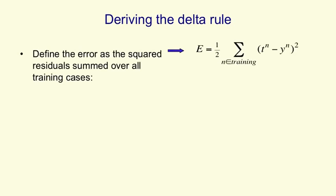So now we're going to derive the delta rule. We start by defining the error measure, which is simply our squared residual summed over all training cases. That is the squared difference between the target and what the neural net predicts, or the linear neuron predicts, squared and summed over all training cases. And we put a half in front, which will cancel the two when we differentiate.